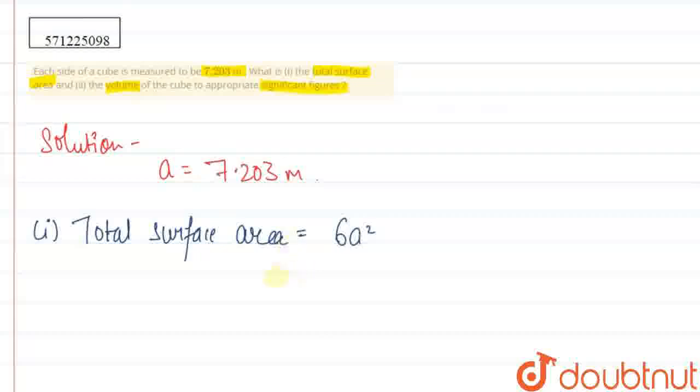Now we will put the value of a. So 6 times 7.203 squared. It will be 6 into 51.883209, and when we multiply this, it will be 311.29925 meter square.